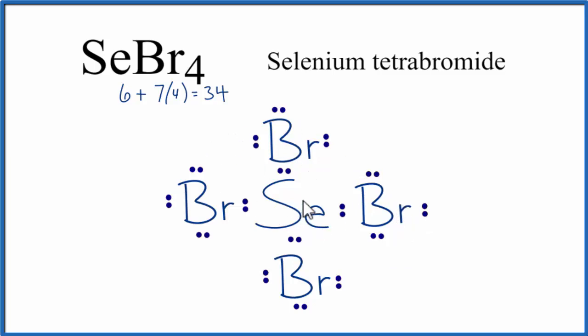Turns out that selenium can have an expanded octet, more than 8 valence electrons. So we'll place that last pair of electrons right here on the Se.